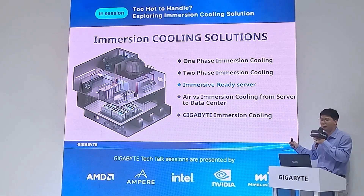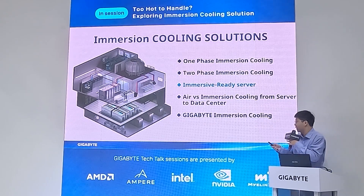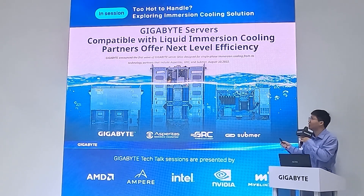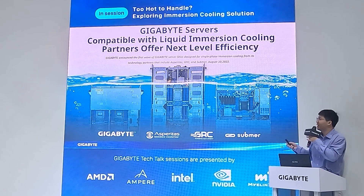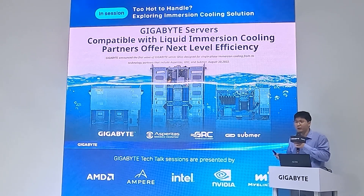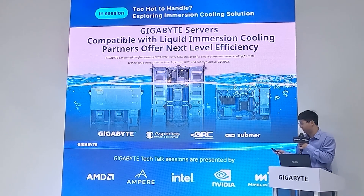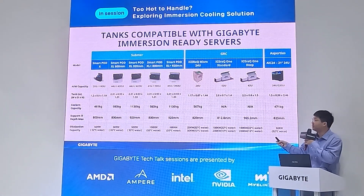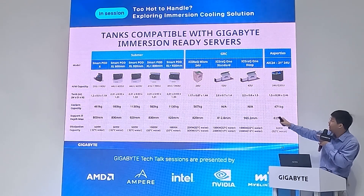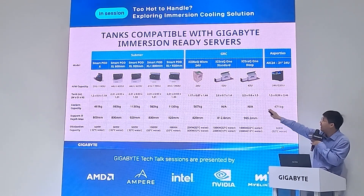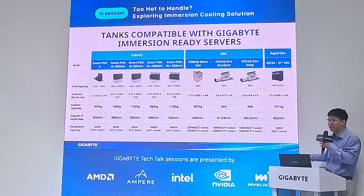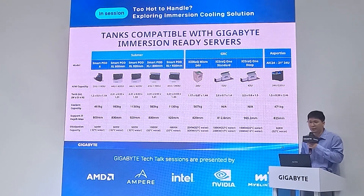I'd like to introduce our immersive ready server, compatible with liquid immersion cooling partners. GIGABYTE works with Asperitas, GRC, and Submer, providing 90-inch immersive ready servers that fit directly into their tanks. Partner tanks include Submer's SmartPod X, SmartPod XL, and SmartPod XL Plus; GRC's ICEtank Micro, ICEtank 1 Standard, ICEtank 1 Tip; and Asperitas AC24. All of these tanks are compatible with GIGABYTE immersive ready servers.